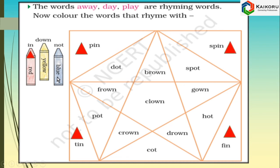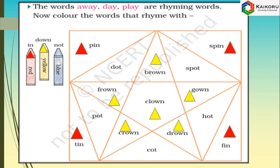And now color the words which have a rhyming word with 'down.' The words are: brown, frown, gown, crown, clown.